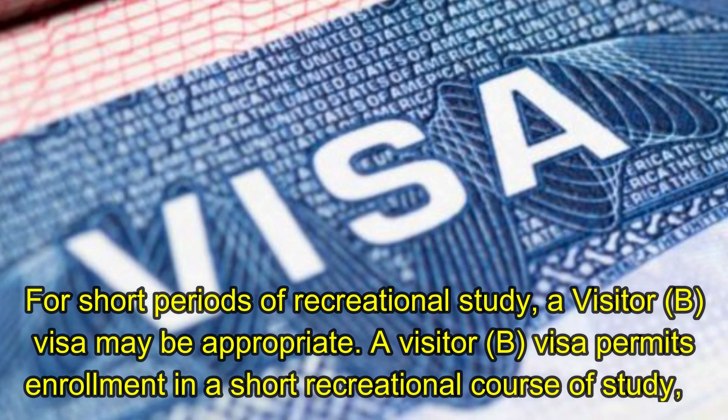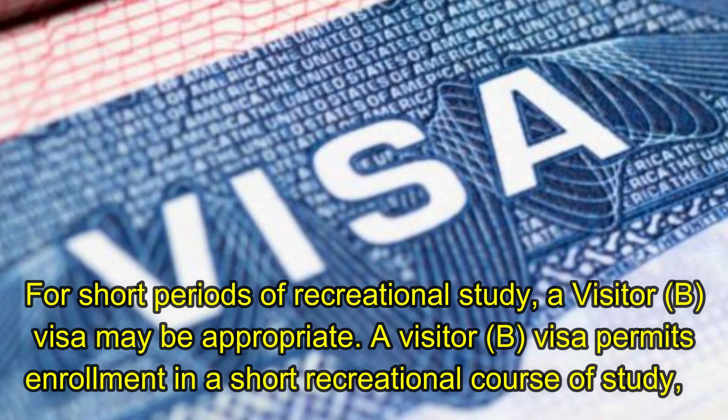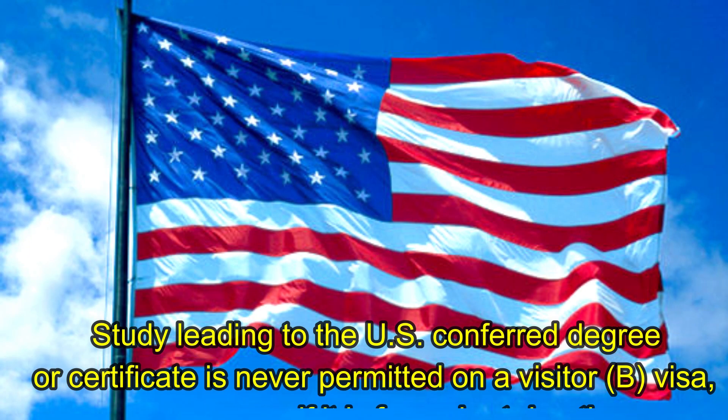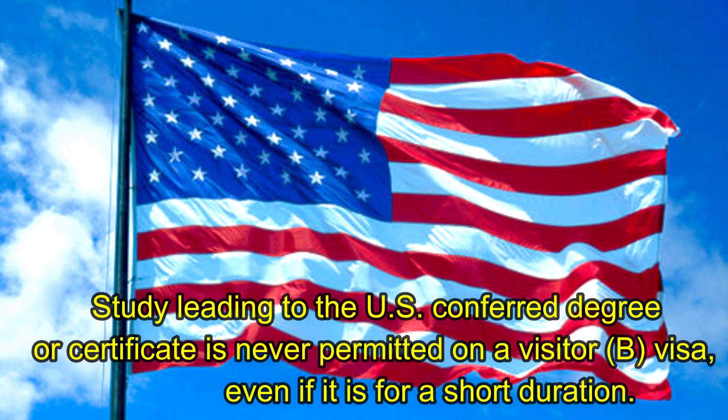For short periods of recreational study, a visitor (B) visa may be appropriate. A visitor (B) visa permits enrollment in a short recreational course of study, which is not for credit toward a degree or academic certificate. A study leading to a U.S.-conferred degree or certificate is never permitted on a visitor (B) visa, even if it is for a short duration.